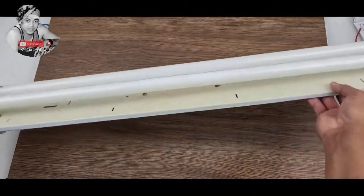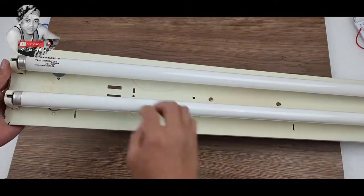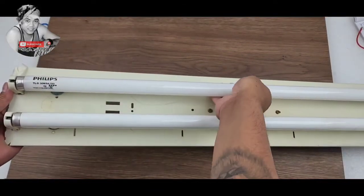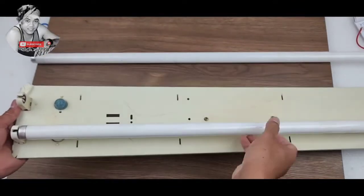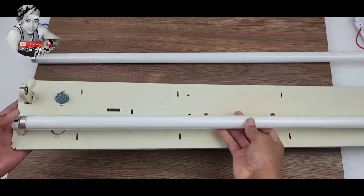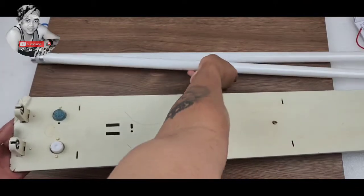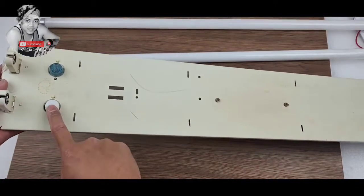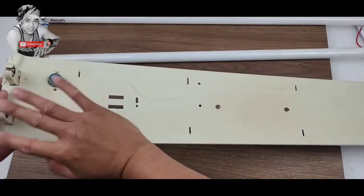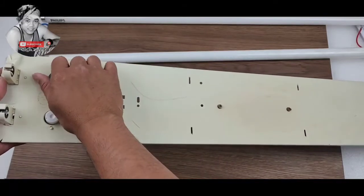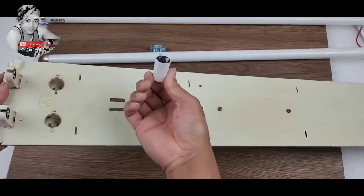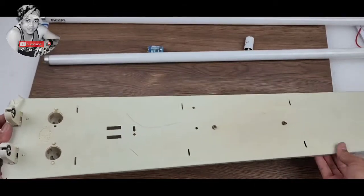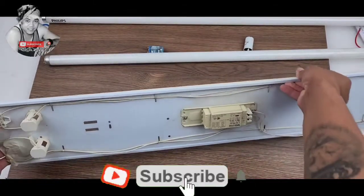We have this tube light which is 220. We will isolate this all and we will change to LED light. So these two starters we will isolate, we don't need these two starters now. All we have to do is to rectify the rewiring for this.